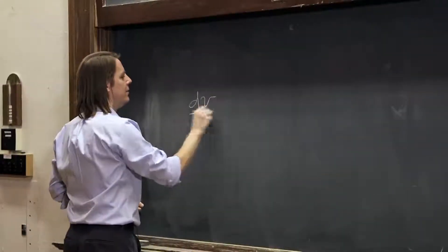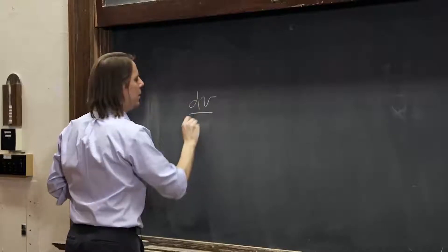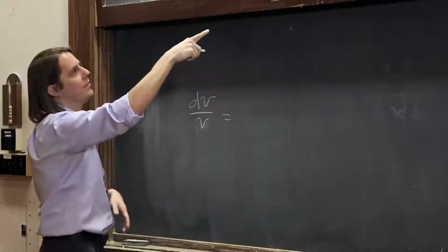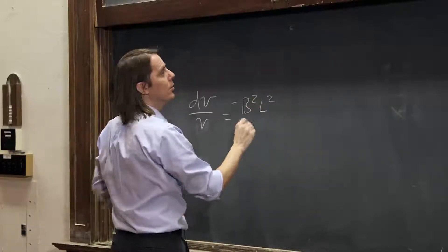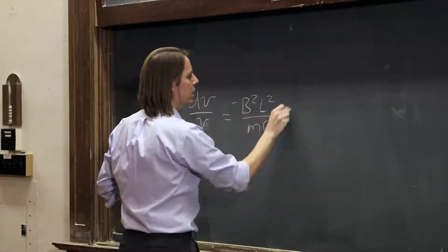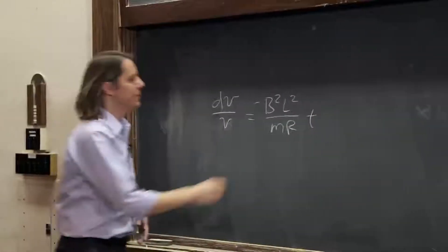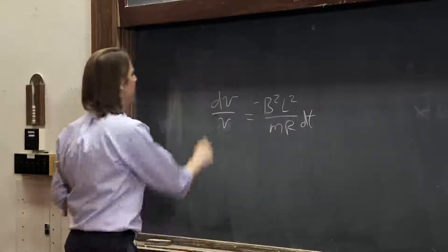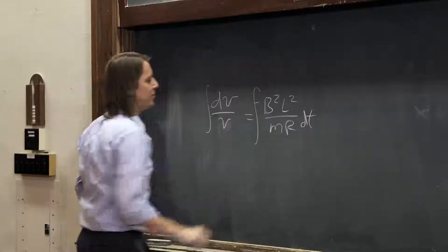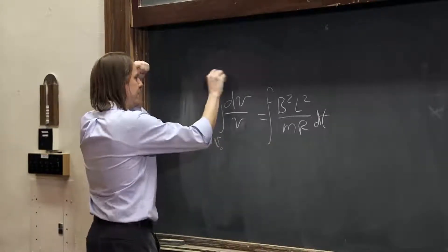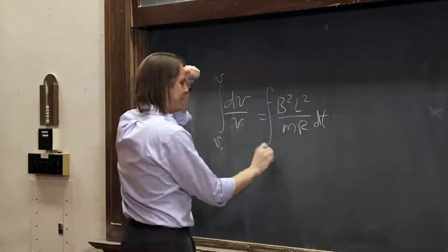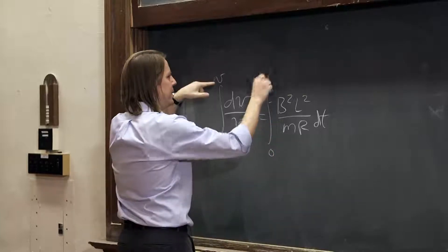So all you've got to do in this case is get the v's on one side and the t's on the other. So you say dv over v, brought that v under, take the t to the other side, minus b squared L squared over m R dt. And now integrate both sides. And you've got to think about your problem. We're trying to go from v naught to some v at time t, and v naught happened at zero, and we're trying to get the v at some time t.